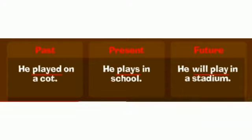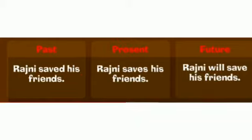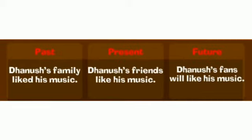Here are a few examples. He played on a court — 'played' is past tense. He plays in school — 'plays' is present tense. He will play in a stadium — 'will play' is future tense. Next example: Rajni saved his friends — past tense; Rajni saves his friends — present tense; Rajni will save his friends — future tense.